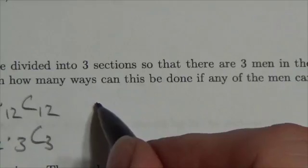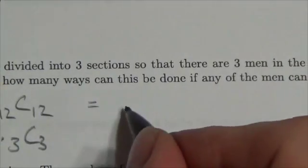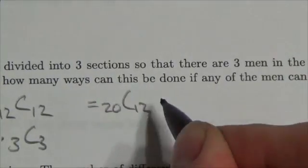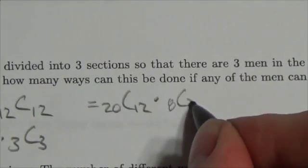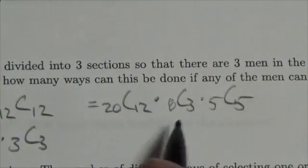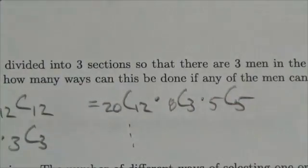Over here I could also do this as 20 choose 12. Let's say multiply this—that's going to leave me with 8. So 8 choose 3 and leave me with 5 choose 5. Like, there's lots of different ways you can do this.